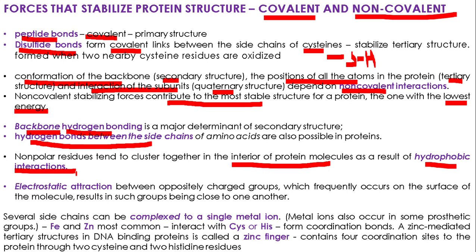There is also electrostatic attraction. Electrostatic attraction between oppositely charged groups, which frequently occurs on the surface of the molecule, results in such groups coming closely together. Electrostatic attraction between positive and negative groups in biomolecules is very important, and such parts of the molecule have a tendency to come together. This is also related to the folding of the protein molecule.